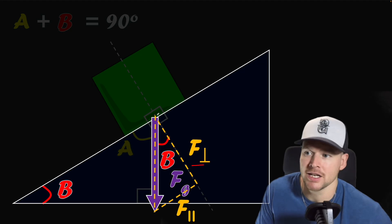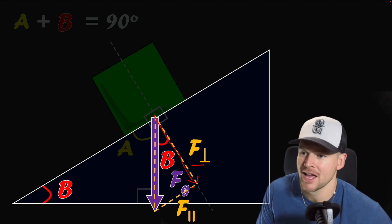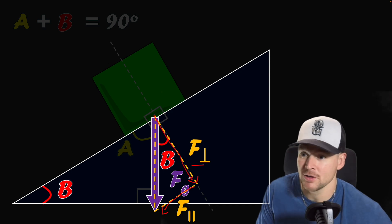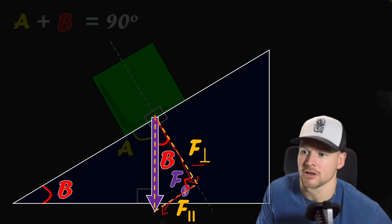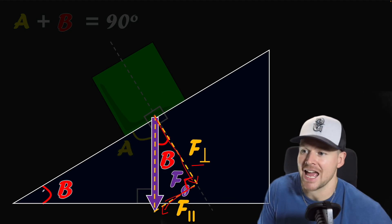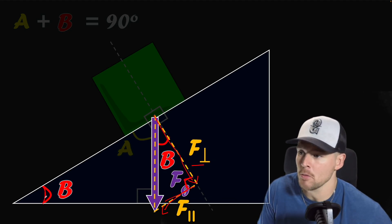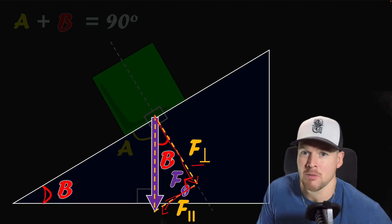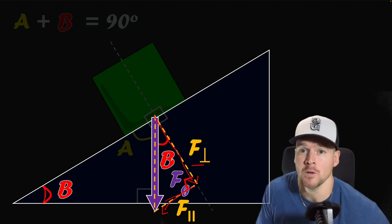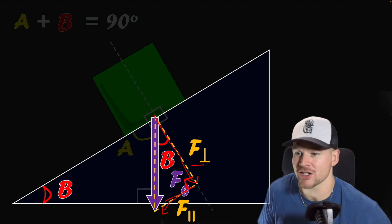F-perpendicular represents how much gravity is pushing it onto the ramp, and F-parallel represents how much gravity is pulling it down. Since this is a 90-degree triangle — perpendicular to the ramp on one side and parallel to the ramp on the other — I can use angle B, the same angle as the slope, to find those components. Breaking FG into its parallel and perpendicular components is the first step for basically any inclined plane question.